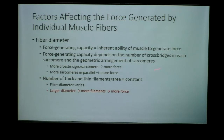Fiber diameter dictates how many crossbridges are formed — if we have more sarcomeres, we have more crossbridges. How many sarcomeres are in parallel also tells us how much force is generated. Both the number of crossbridges in a single sarcomere and the number of sarcomeres in the muscle translate to more force.